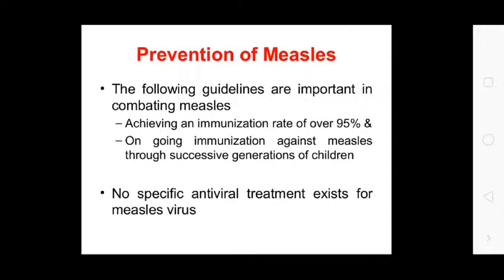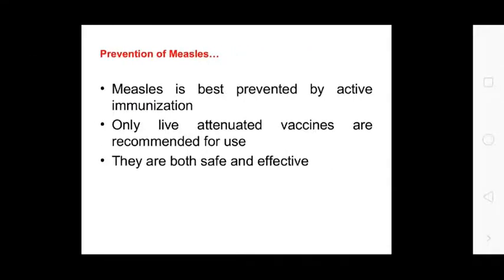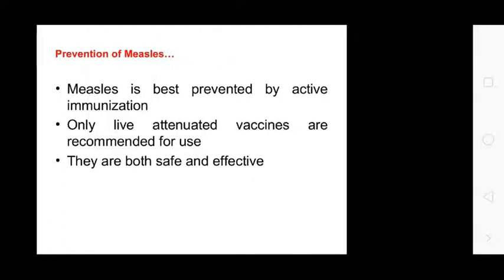Prevention of measles: important goals include achieving high immunization rates and maintaining ongoing immunization against measles disease through successive generations of children. No specific antiviral treatment exists for the measles virus. Measles is best prevented by active immunization using live attenuated vaccines, which are recommended and are both safe and effective.